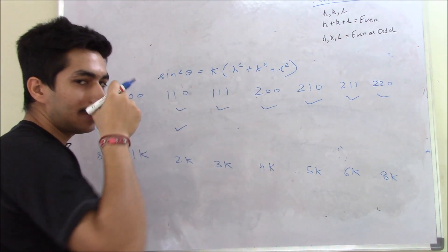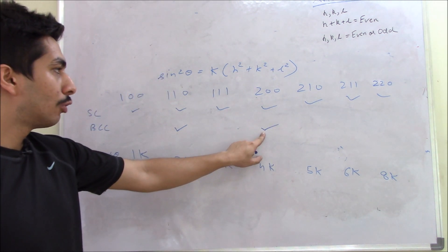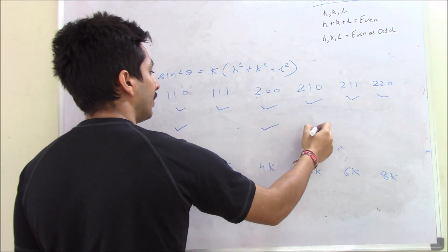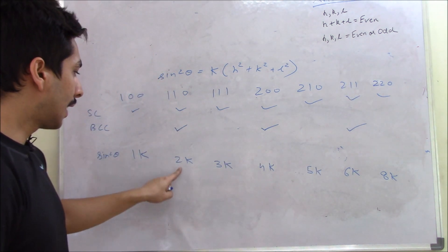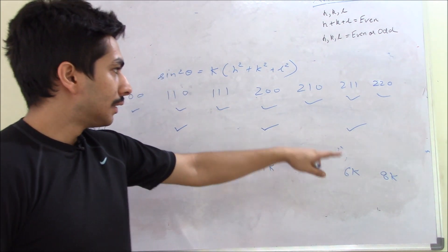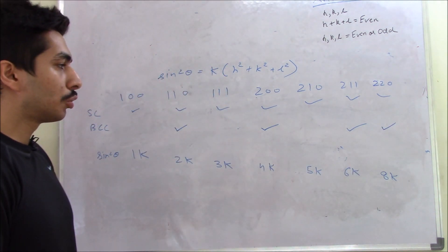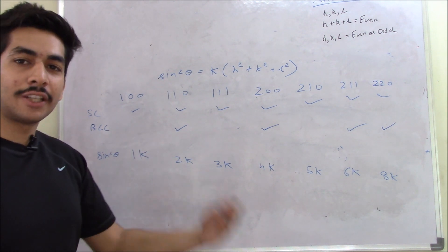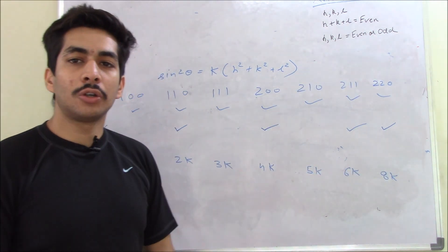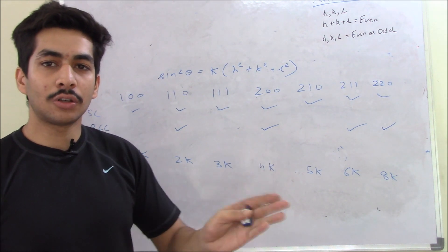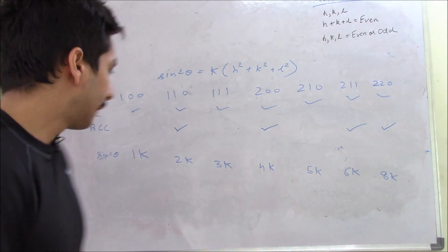For BCC, since the sum of Miller indices must be even: (1,1,1) sums to 3 — odd, no peak. (2,0,0) sums to 2 — even, peak at 4K. (2,1,0) sums to 3 — odd, no peak. (2,1,1) sums to 4 — even, peak at 6K. (2,2,0) sums to 4 — even, peak at 8K. So BCC shows peaks at 2K, 4K, 6K, 8K, 10K, 12K — every alternate value.